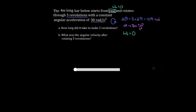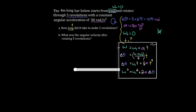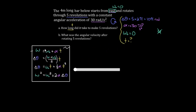We want to find time, and we know delta-theta, alpha, and omega-initial. Which variable is left out? Omega-final — it's not involved at all. So we use the rotational kinematic formula that does not involve omega-final. The first formula has omega-final, so skip it. The second also has it. The third formula has no omega-final, so we'll use that one.